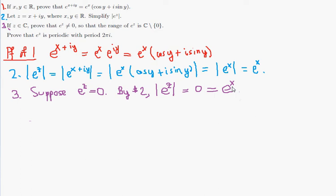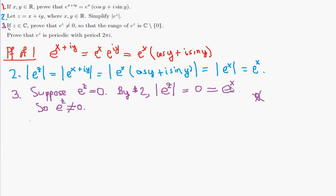where x is a real number. We know full well that e to a real number exponent cannot equal 0 — e is a real number, x is a real number, and e to the x can never be 0. Therefore the magnitude of e to the z cannot be 0 either, so e to the z cannot be equal to 0.